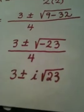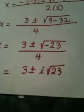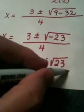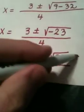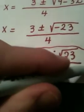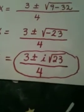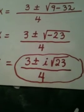23 stays under the radical because it's not a perfect square and there's nothing that you can take out, no perfect square factor. And this is all over 4. Those are my two answers. And those two answers are not real. So this equation does not have real solutions, it has complex solutions.